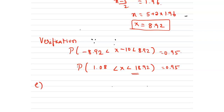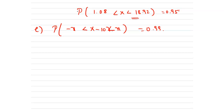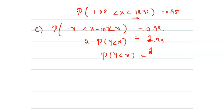For the last part, we have to find x such that p of negative 6 less than X minus 10 less than x equals 0.99. By simplifying using the same method as above, we get twice p of y less than x equals 0.99 plus 1, so p of y less than x equals 1.99 divided by 2, which is 0.995. Substituting back for y, x minus 10 less than x equals 0.995.